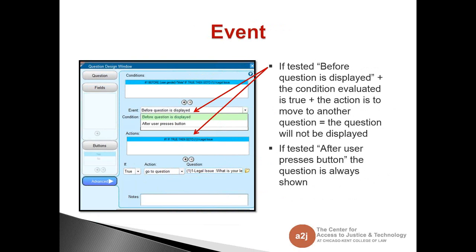The event has two options: either before a question is displayed, or after a user presses button. If you select before a question is displayed and the condition is true and the action is to move to another question, this question will never be displayed to the end user. If you select after a user presses button, the question is always shown. So 'before a question is displayed' could potentially not be shown; 'after a user presses button,' the end user will always see this question.